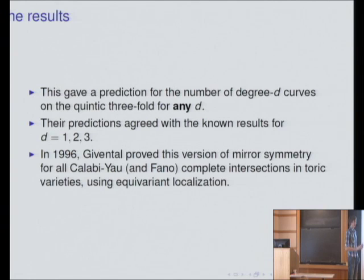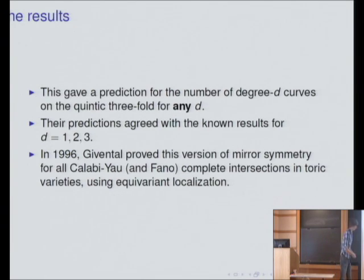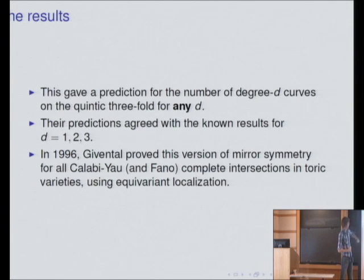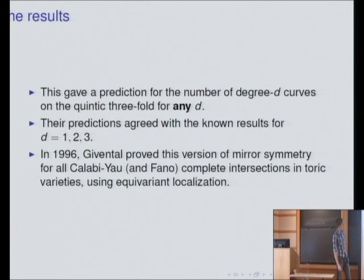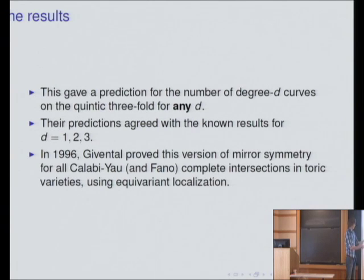I'm talking about non-singular genus zero curves. This gives predictions for the numbers of curves on the quintic threefold in any degree. The prediction agreed with the known results in degrees one, two, and three, but went much further and predicted a lovely structure underlying these numbers as well. This version for genus zero Gromov-Witten invariants relating to the B model was proven by Givental, and also Lian, Liu and Yau.